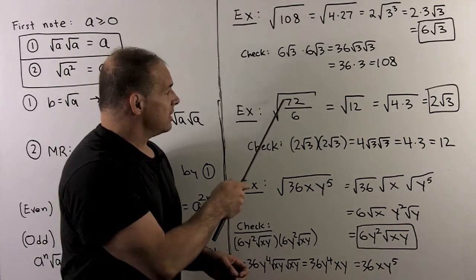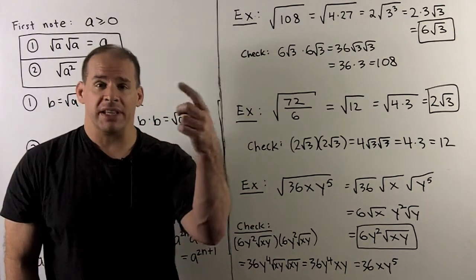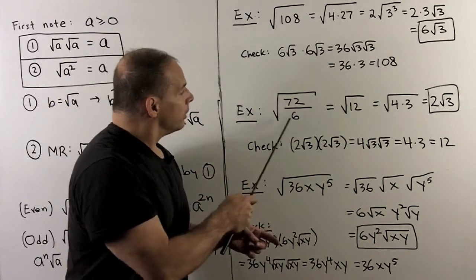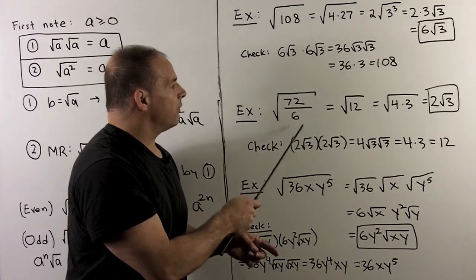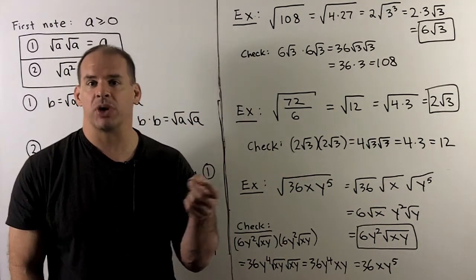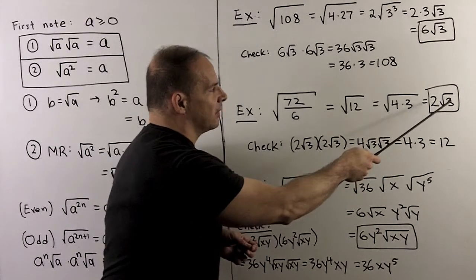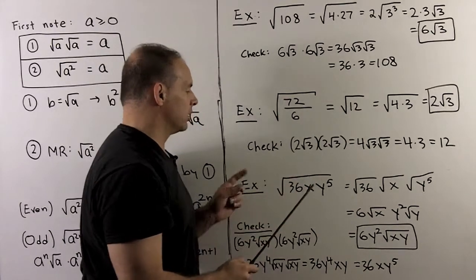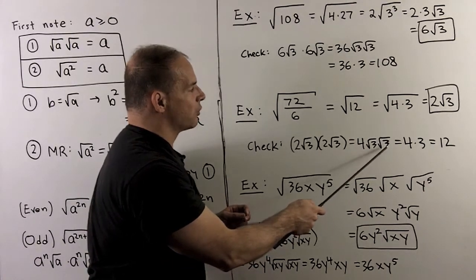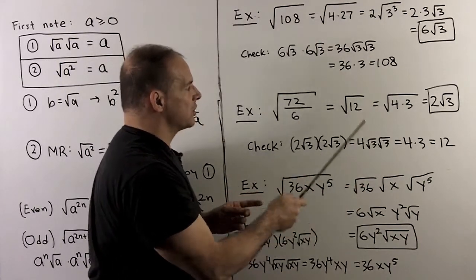For square root of 72 over 6: when I have a fraction, I like to simplify inside the radical first. Here, 72 divided by 6 becomes 12, so we're looking at square root of 12. That equals 4 times 3, or 2 squared times 3, so we pull out a 2 to get 2 radical 3. To check: 2 radical 3 times 2 radical 3 gives a 4 from the twos, and radical 3 times radical 3 is 3, so 4 times 3 is 12. That agrees with what we have under the radical.